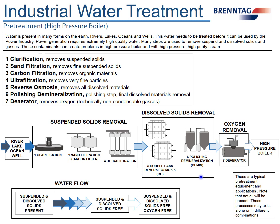Then through what's called a polishing demineralization, or polishing demin, where additional removal of anions and cations occurs before being fed into the boilers. The last step is de-aeration, where oxygen and non-condensable gases are removed. From there, the water passes into a high-pressure boiler.